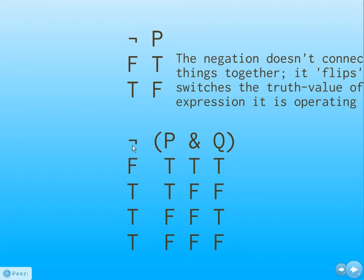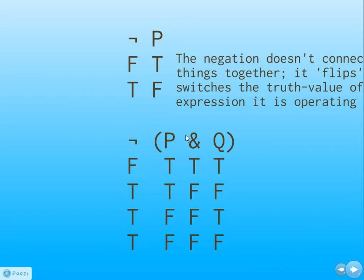Logical operators can act on other logical operators. Here we have the usual P AND Q with its truth table — true, false, false, false. If I put NOT in front of the parenthesis, I'm flipping the value of the AND. So NOT(P AND Q) gives us false, true, true, true. What I'm saying is the opposite of P AND Q. That statement is only false when both P and Q are in fact true, because I just said they weren't.